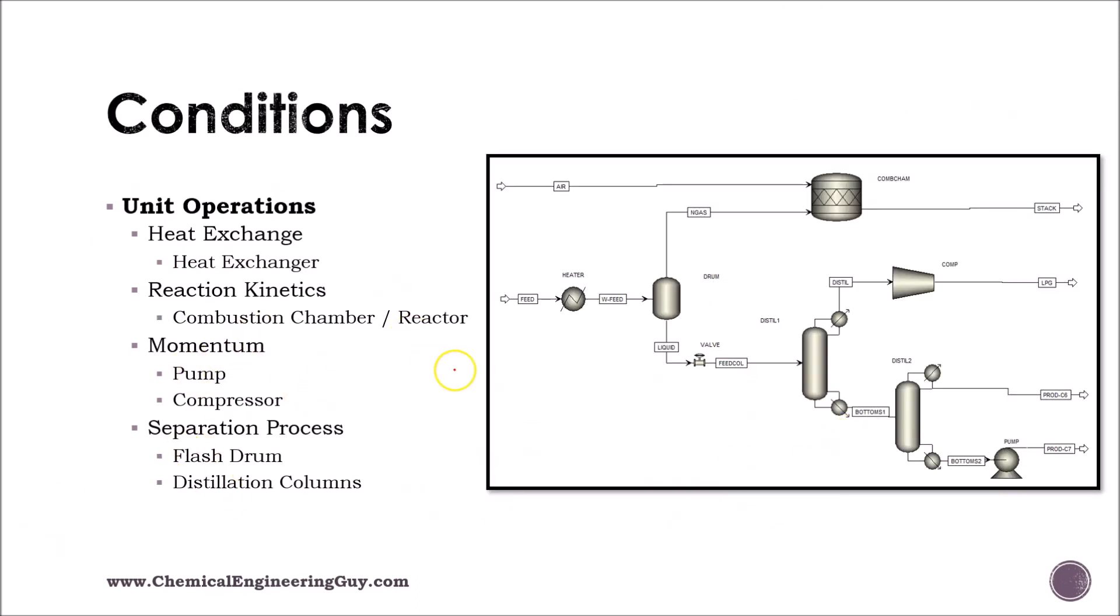And these are the types of unit operations that we got to try to add. Heat exchanger is only one. Reaction kinetics. I'm probably wondering why am I using a reactor, where this is a combustion chamber, but remember that technically, if there is a chemical change, and I want to model this as a chemical reaction, I can do it. Momentum operations or pressure changers will be pump and compressor, and technically also the valve. Separation process will be these flash drums and the distillation columns. And we are all set to start working in the simulation environment.